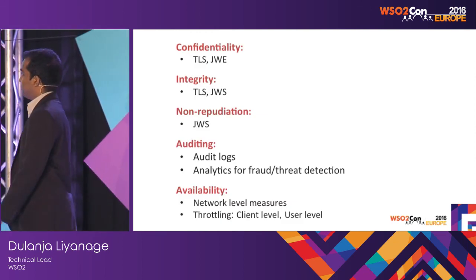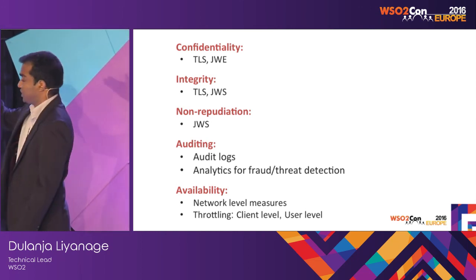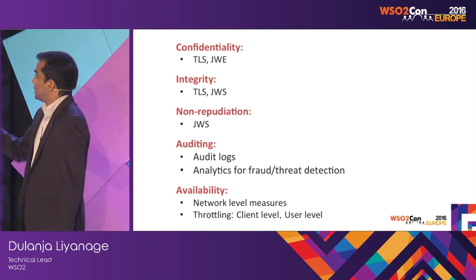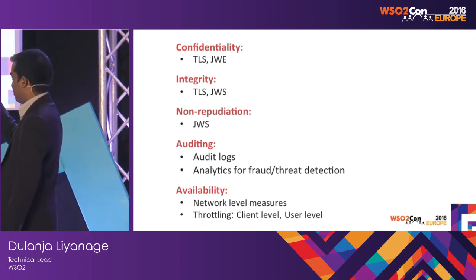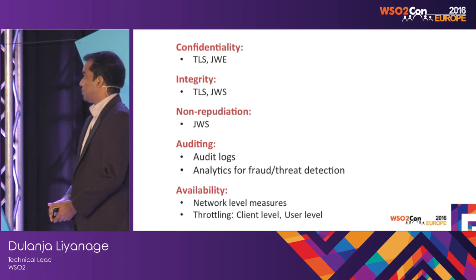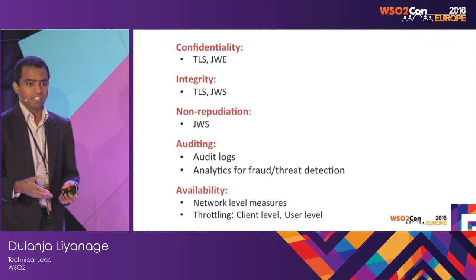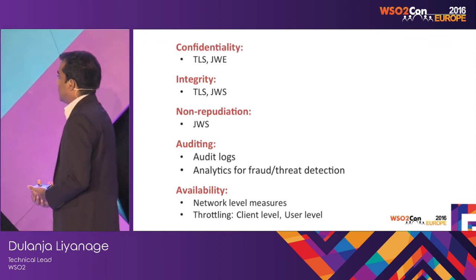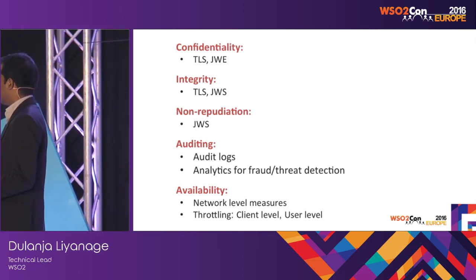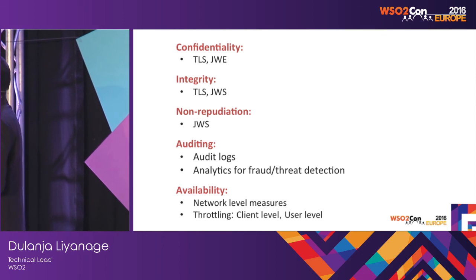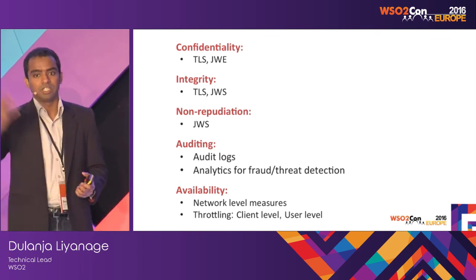Finally, the other five security attributes. Confidentiality can be maintained using transport level security or JSON Web Encryption. For integrity, again transport level security and JSON Web Signature. Non-repudiation uses JSON Web Signature. Auditing needs to be done using audit logs and analytics for fraud and threat detection — WSO2 already has an analytics framework for that. Availability needs to be handled at the network level using hardware devices or applications, and using throttling — client-level throttling and user-level throttling, so if a user tries to bombard the system, throttle them out.